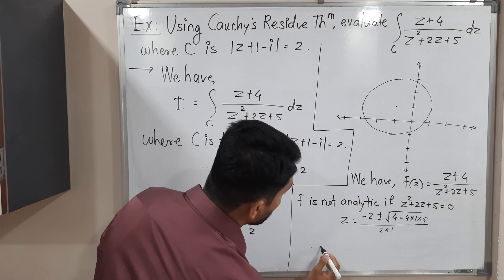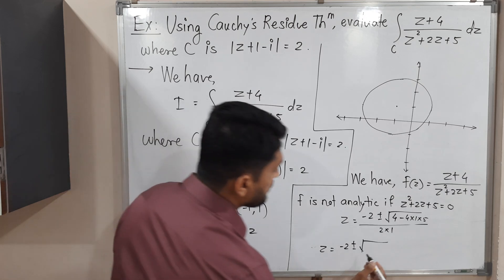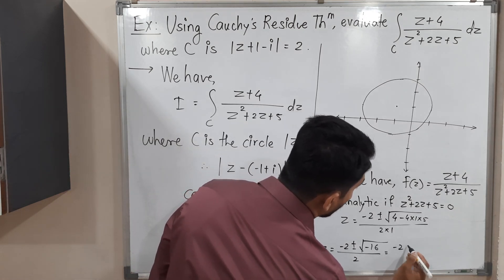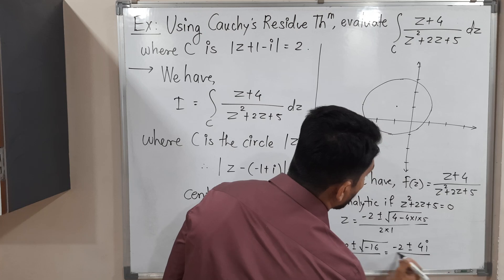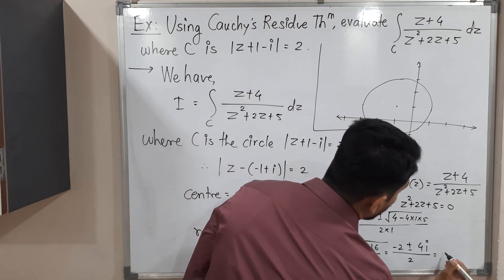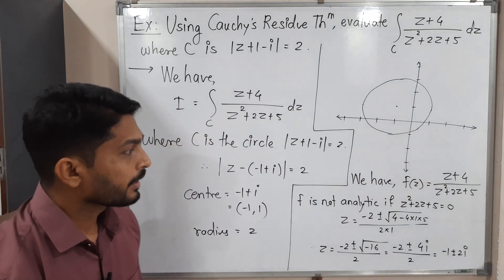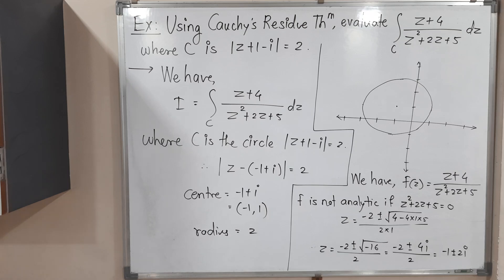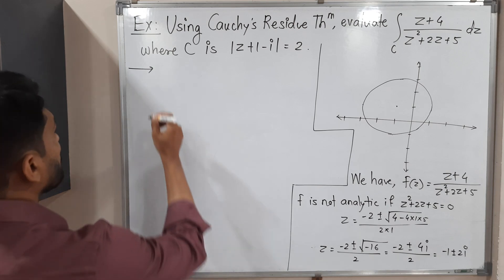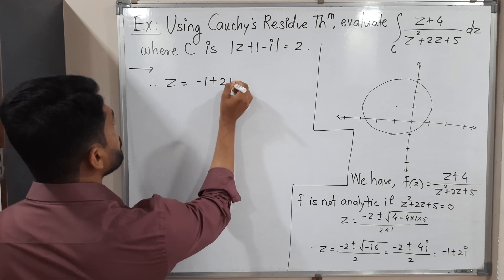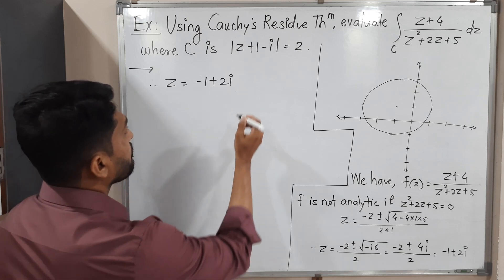Simplifying: z = (−2 ± √(−16)) / 2 = (−2 ± 4i) / 2 = −1 ± 2i. So the two singular points are z = −1 + 2i, which we call α, and z = −1 − 2i, which we call β.